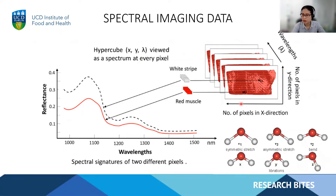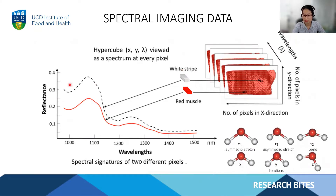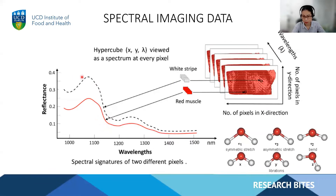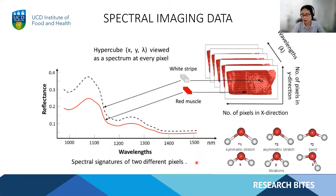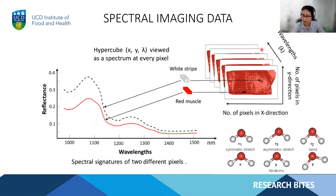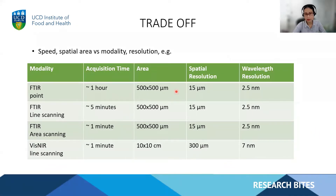There are two ways to view this data. The first one is to extract the pixel spectra and plot it. Generally the spectra of different materials will show different spectral features due to the chemical vibrations of the chemical bonds, as we see here. Another way is to view the three-dimensional data as a grayscale image at different wavelengths. Depending on the applications, there are different spectral imaging modalities available.